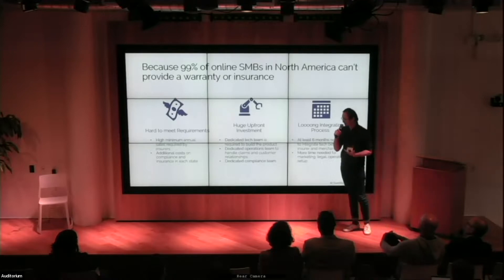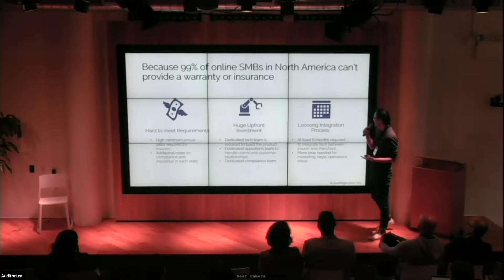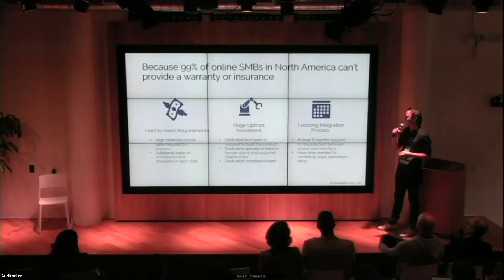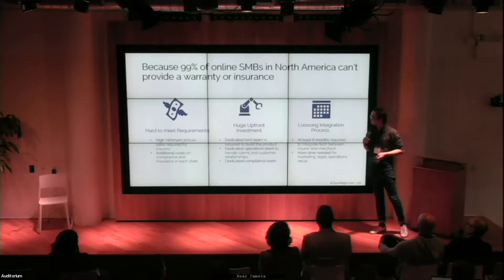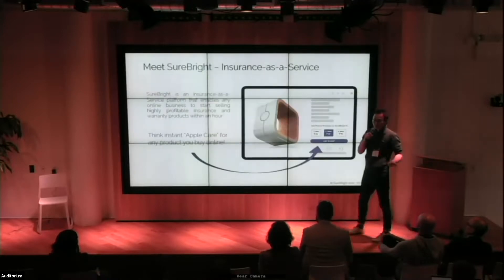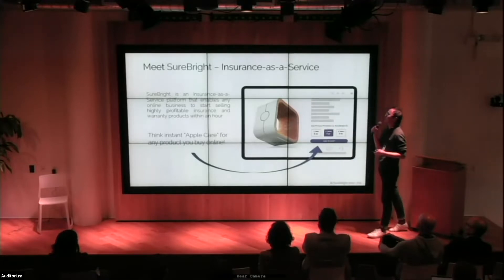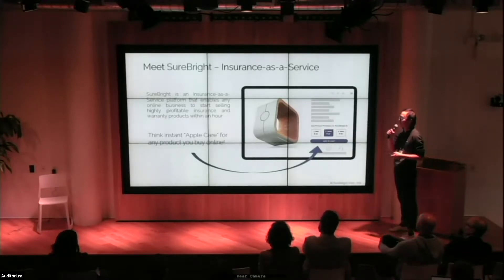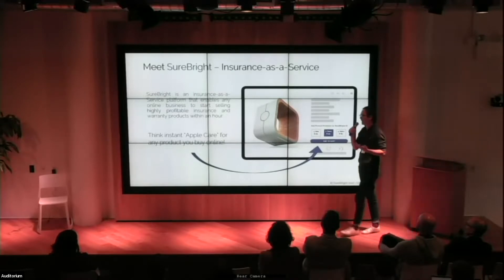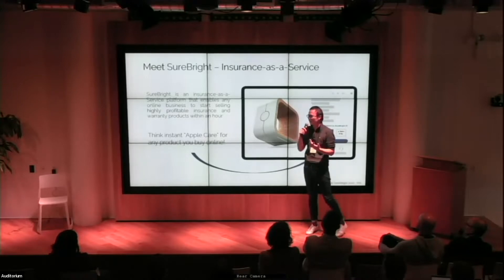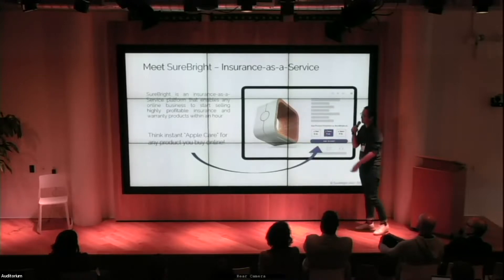The barriers are significant: merchants need at least $3 million in insurance premium for an insurer to even consider them, you need to dedicate a tech team, operations team, and compliance team to launch the project, and it takes at least six months to integrate tech between the insurer and the merchant. So we built Sherbrite — an insurance-as-a-service platform that enables any business to start selling highly profitable insurance within one hour. Just as you can go on Shopify and create a store in five minutes, we're doing that exact same thing for insurance.